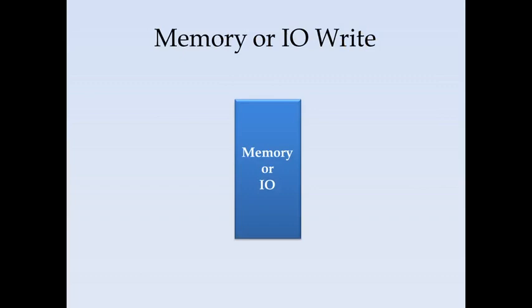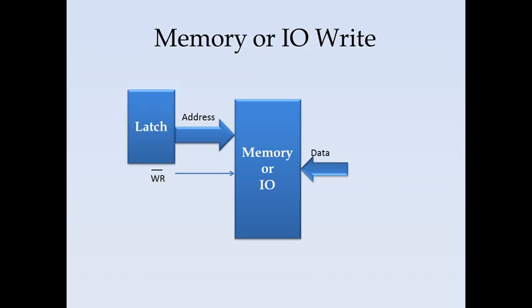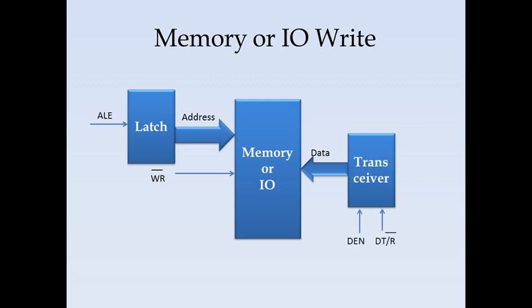For a memory or I/O write operation, the 8086 first supplies the address of the location to be written, then provides both the data and the write command. The data is supplied by the 8086 to the memory or I/O device. Since address and data are multiplexed, the ALE signal is again used for latching. DEN and DT/R-bar control the transceivers; for write, DT/R-bar should be active high.